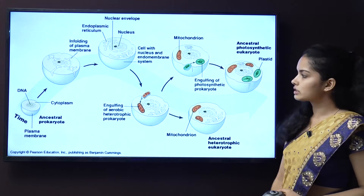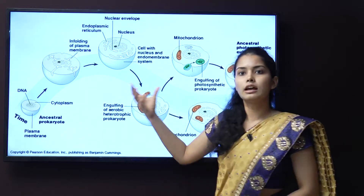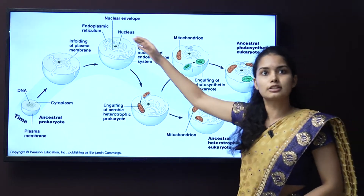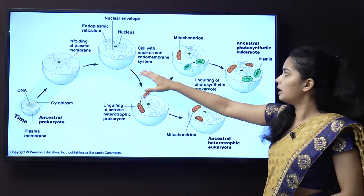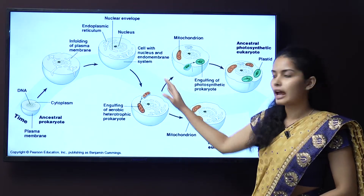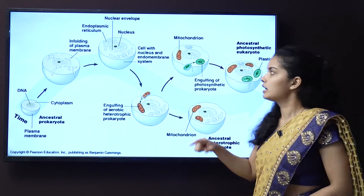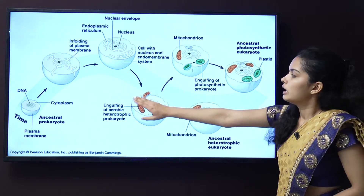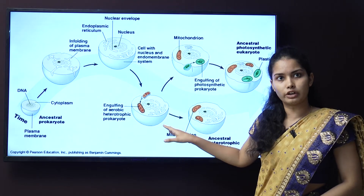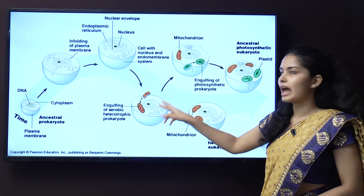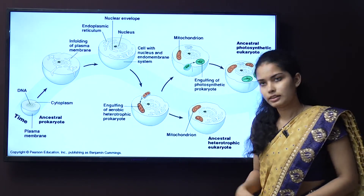The endosymbiotic theory describes how from a prokaryotic bacterium, a eukaryotic cell developed — with a nucleus, plasma membrane, and ER. Over time, the two prokaryotic bacteria — mitochondria and chloroplast — were present outside the cell. The eukaryotic bacteria engulfed the mitochondria and started living symbiotically. That is why this theory is known as the endosymbiotic theory.